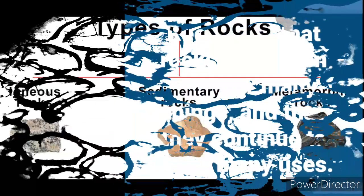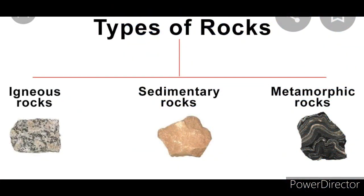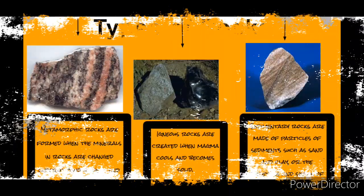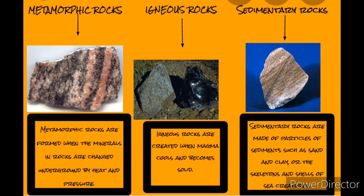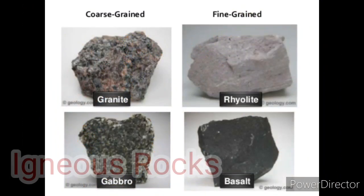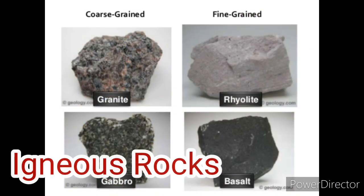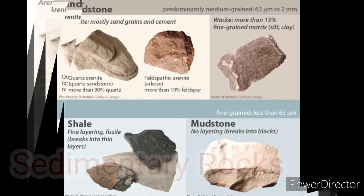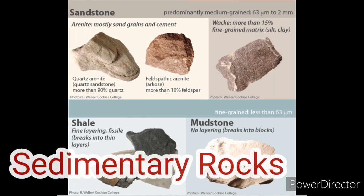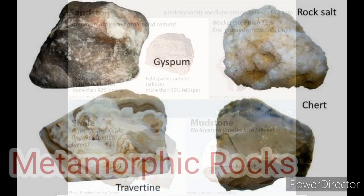We identified in our previous lessons that there are three types of rocks, each identified based on how they are formed. The first one is igneous rocks, wherein these rocks are formed from the melting and cooling of magma or lava. Second, sedimentary rocks, which form from weathering, eroding, and cementing.